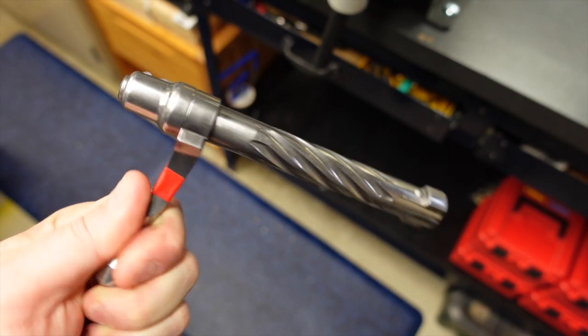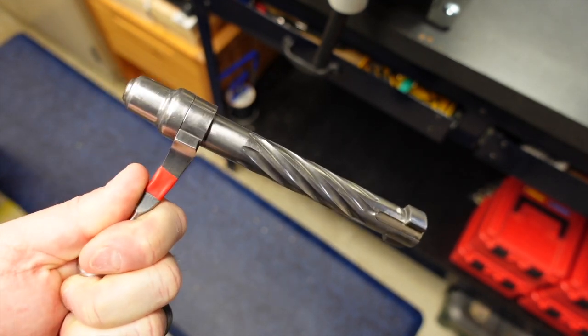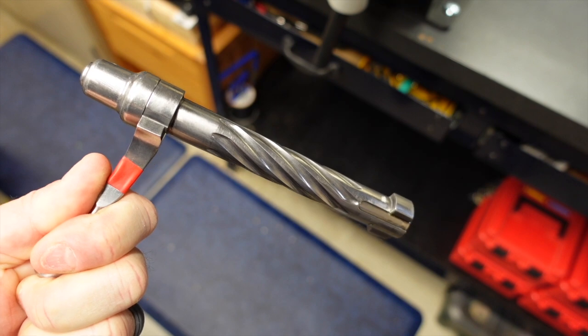Do you have a Remington bolt or a clone bolt and you need to get the firing pin assembly out and you don't have the proper tool? I'm going to show you how to do it.